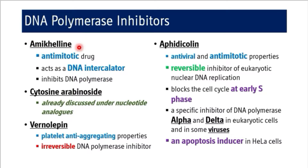Amychelline is an anti-myelotic drug. It acts as a DNA intercalator — the inhibitor goes and sits in between the nucleotides of the DNA template and it interferes with the function of DNA polymerase, so DNA polymerase function cannot occur and replication is hindered.